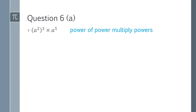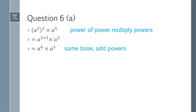Question 6a: (a^2)^3 multiplied by a^5. Apply the power of power law: a^(2×3) = a^6. Then multiply: a^6 × a^5 = a^(6+5) = a^11. That is the answer.